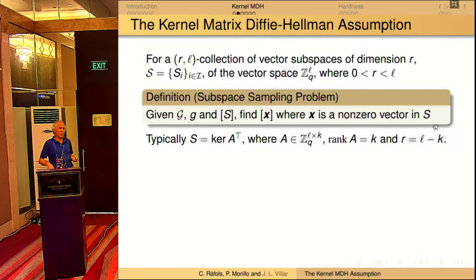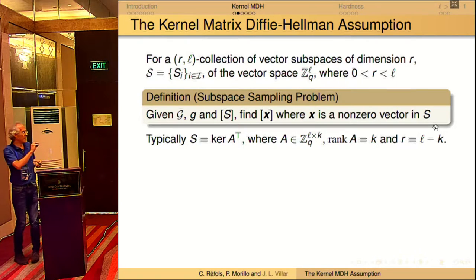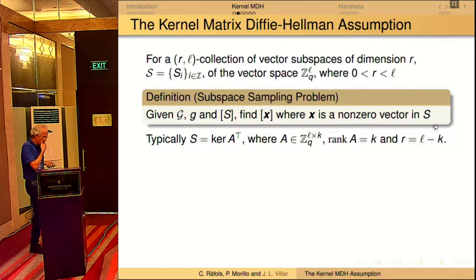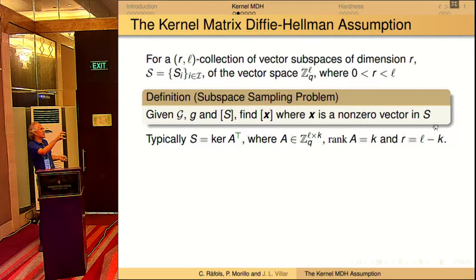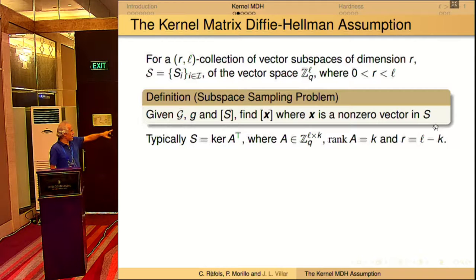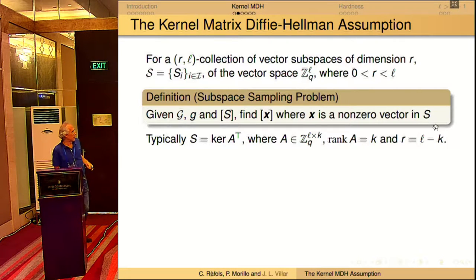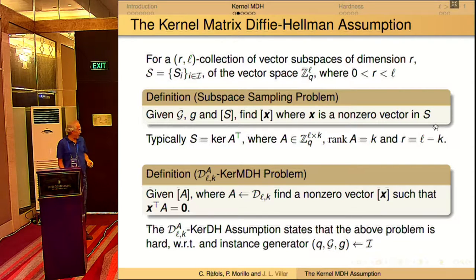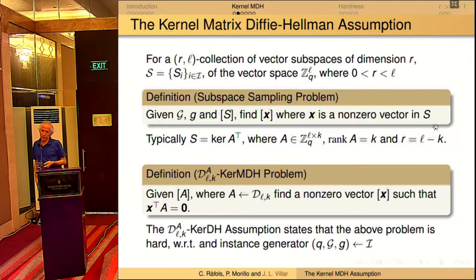The question is: having some subspaces from which it is difficult to sample a vector. Forging a signature or a zero-knowledge proof means generating some element in a set, and we model this as sampling a vector from a hidden subspace. We use the left kernel of a matrix A, or the kernel of A transpose. If the size of the matrix is L times K, the dimension of the kernel is L minus K, assuming A is full rank. We define the kernel MDDH problem as: given a matrix distribution, find a non-zero vector in the kernel of A transpose.